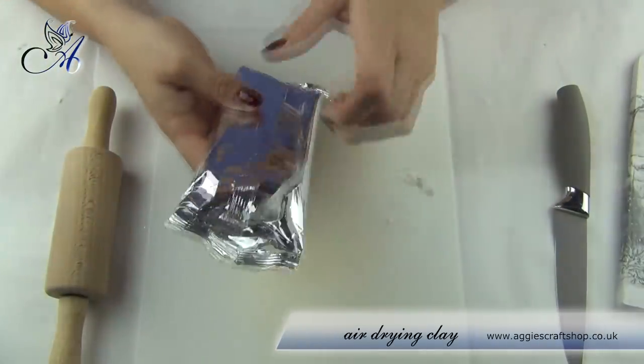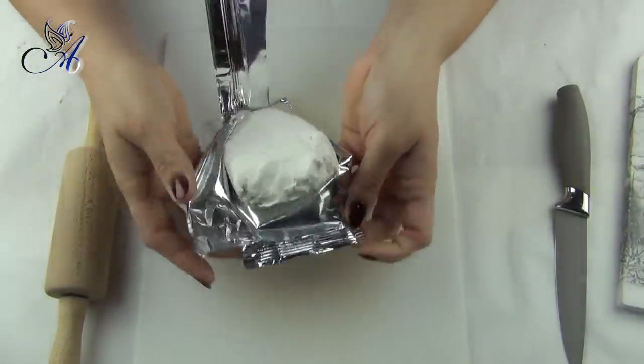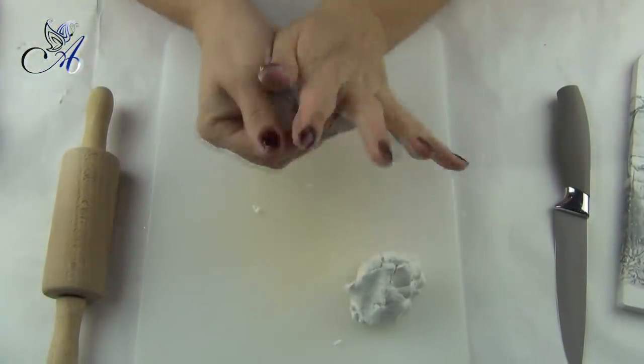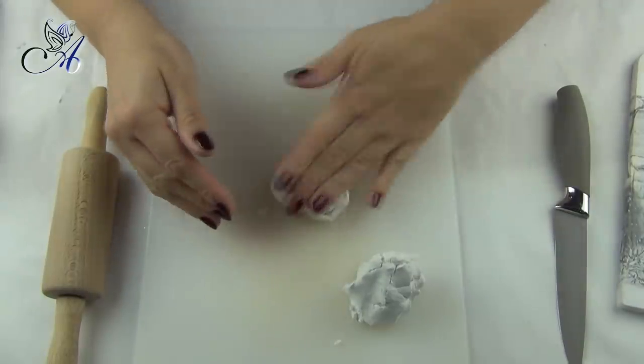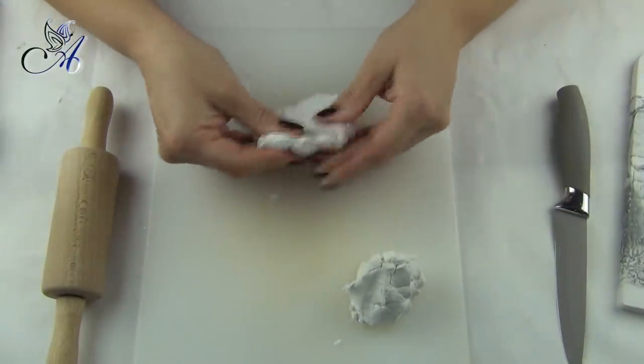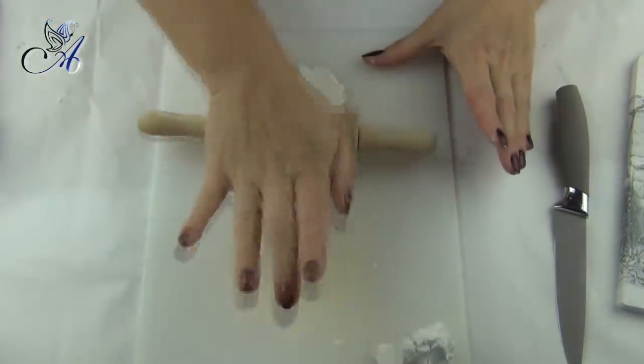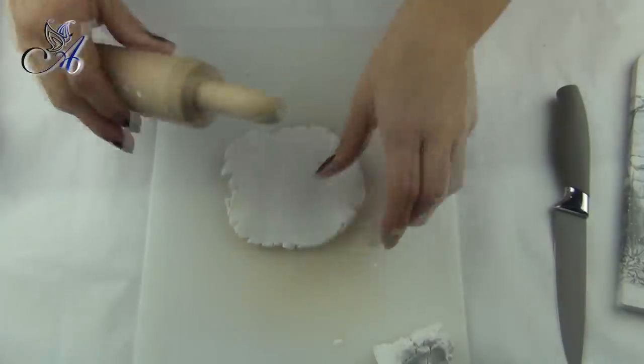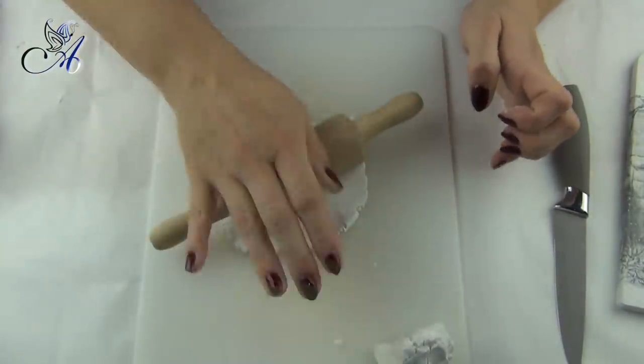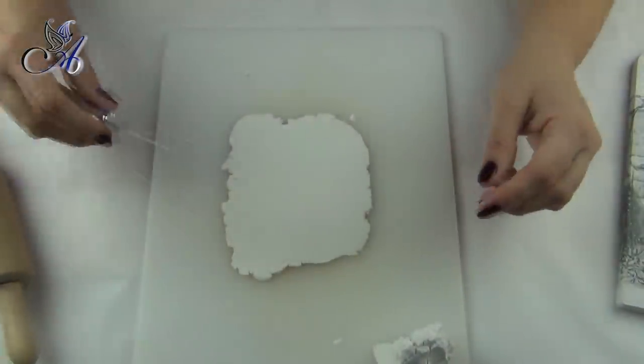Next step will be creating roof tiles using extra light air drying clay. I use old plastic chopping board and small rolling pin which I borrowed from my daughter's playdough set. I flatten my clay with rolling pin and I use knife to create roof tiles.